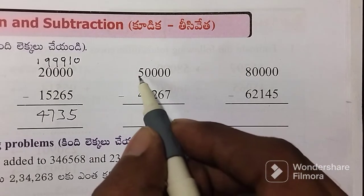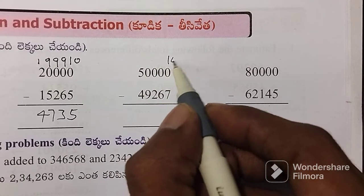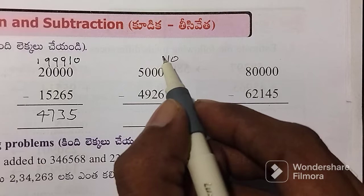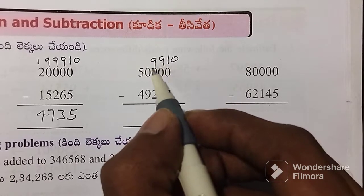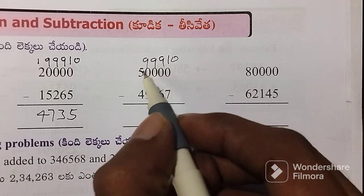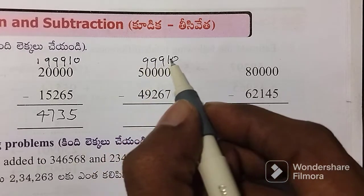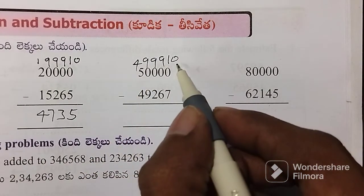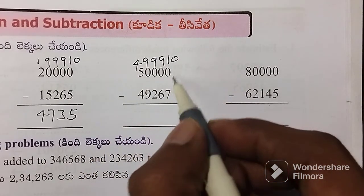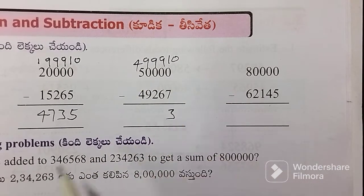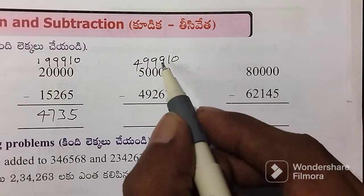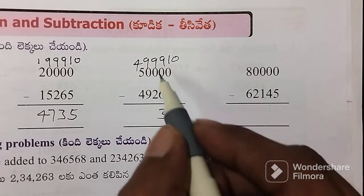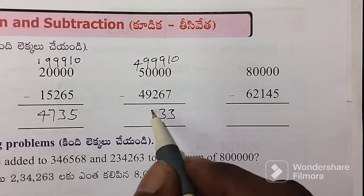We have 10,000. Here, we will have 10,000 is 9,000. It means 9. 9. This 5 is 4. Now, 10 is 7, 3. Now, 9 is 6, 3. Now, 9 is 2, 7.